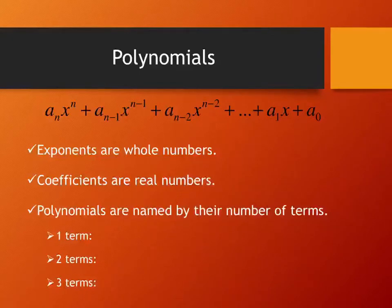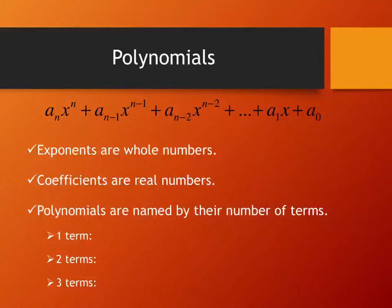I'll explain it in a moment. What you see is a with a subscript of n, x to the power of n, plus a sub n minus 1, x to the power n minus 1, plus a sub n minus 2, x to the power n minus 2, and then dot dot dot, plus a1·x plus a0. That's the basic form — not formula, but form — of a polynomial.